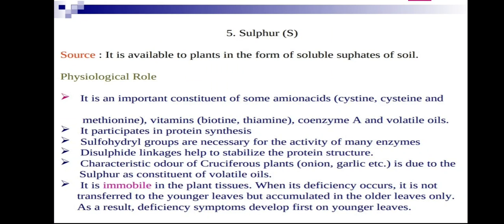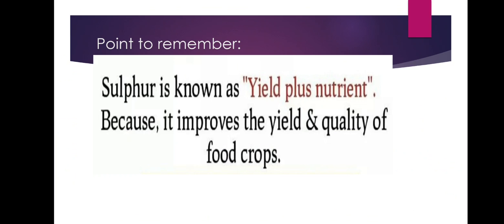The characteristic odor of cruciferous plants, onion, and garlic when cut is due to sulfur as a constituent of volatile oils. Sulfur is immobile in plant tissue, so when deficient it is not transferred to younger leaves but accumulates in older leaves. As a result, deficiency symptoms first appear on younger (anger) leaves. Sulfur is known as a 'yield plus nutrient' because it improves the yield and quality of food crops.